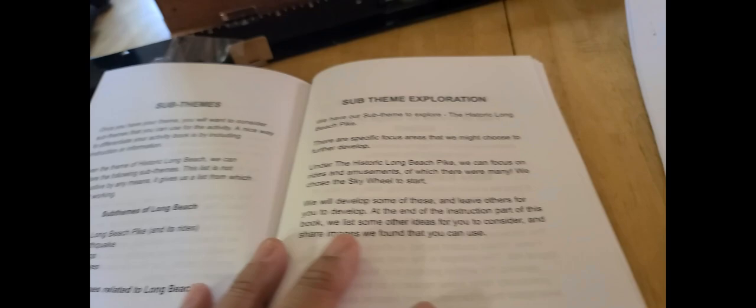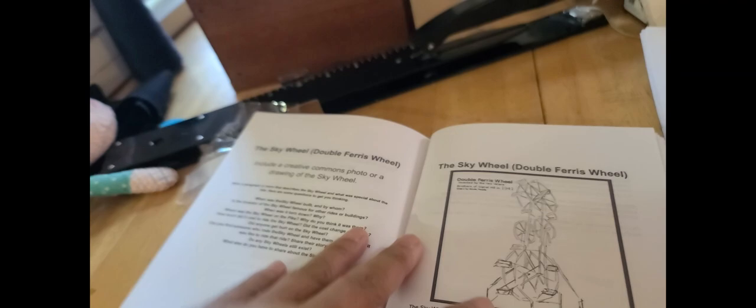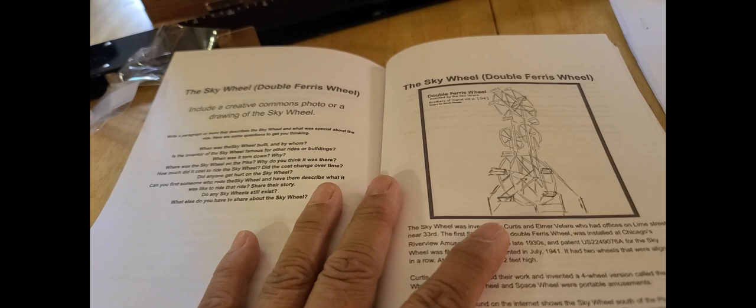Take your theme, explore your theme, dig down a little bit. Our theme that we used as an example was the Sky Wheel, meaning the double Ferris wheel that was at the Long Beach Pike.